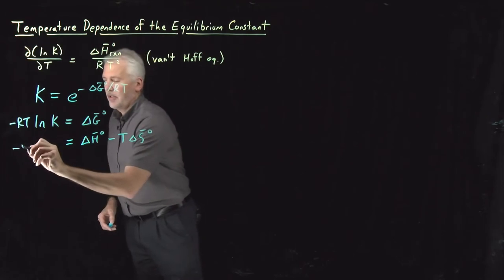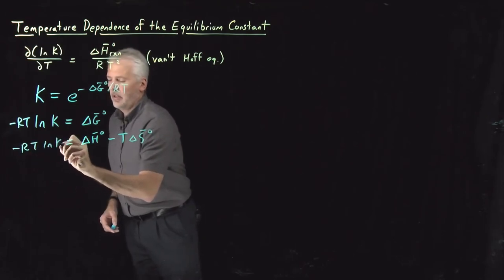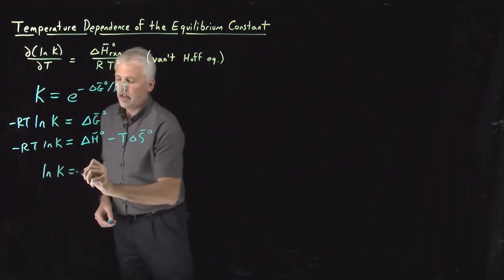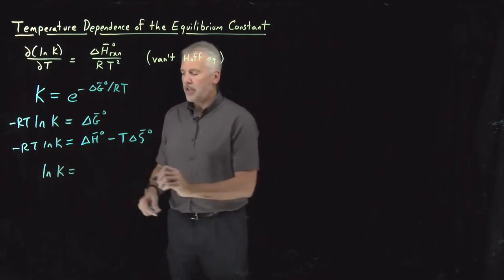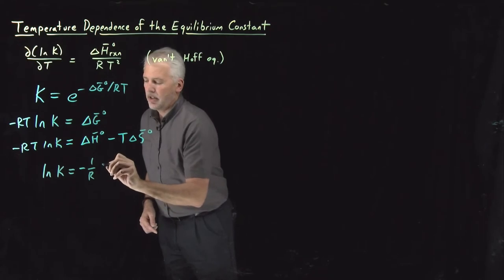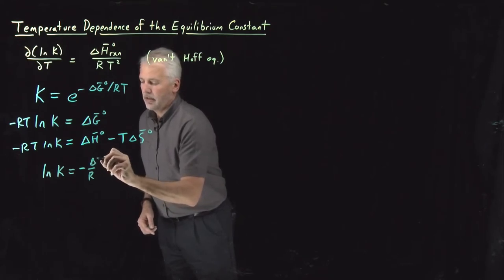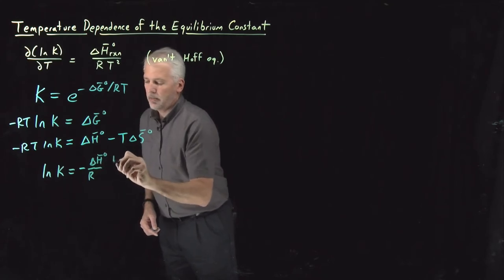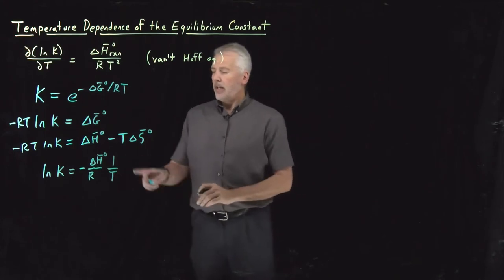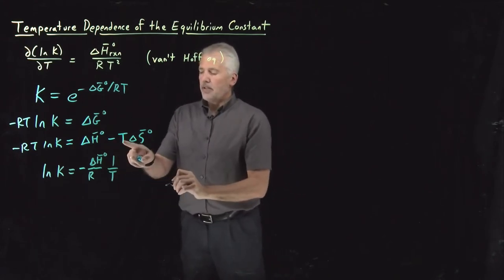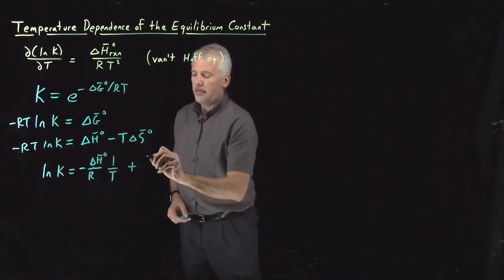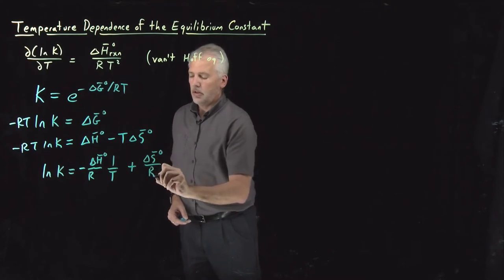Bringing the RT back over to the right side, on the left side we have log K. On the right side, we get minus ΔH over R times 1/T. For the second term, minus T·ΔS divided by minus RT — the negative signs cancel and the T's cancel — leaving ΔS over R.